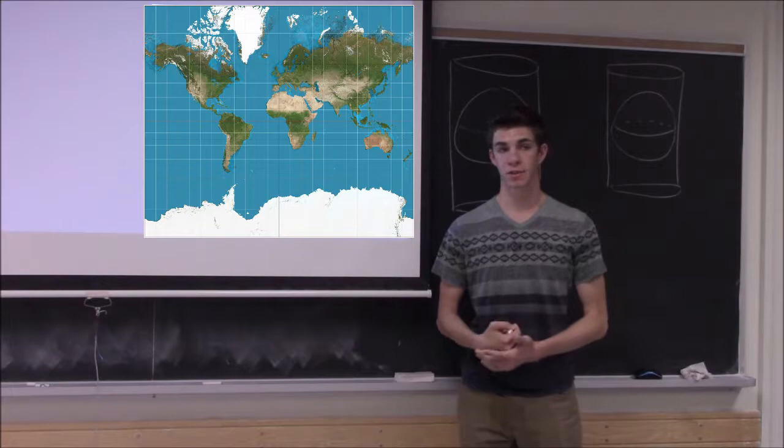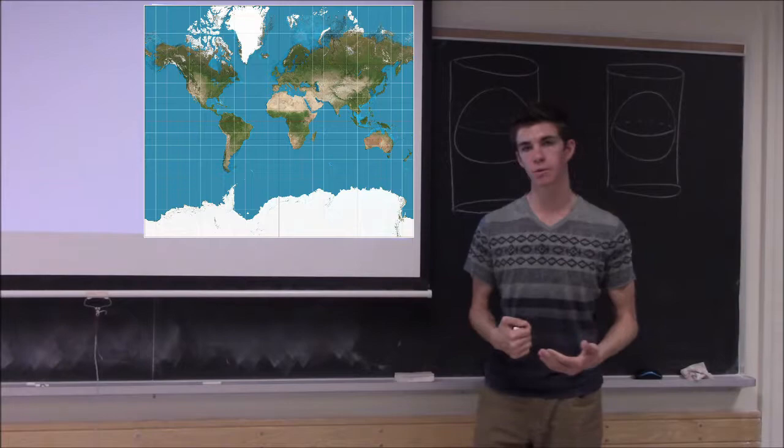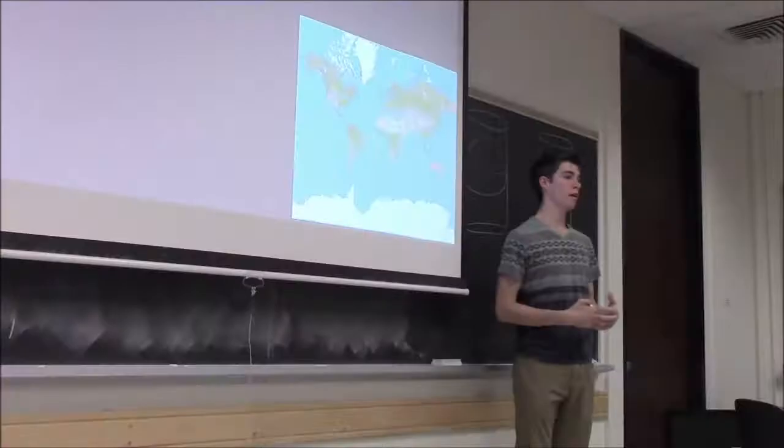One of the most common methods of map projection is called cylindrical projection, and there are a few variances in cylindrical projection. This map is called the Mercator map projection, and it is one of the most common maps seen in the real world.